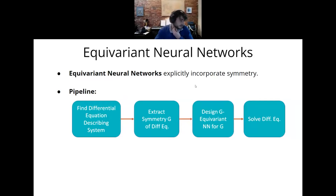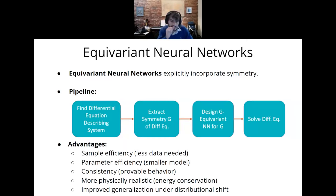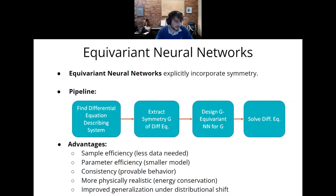Here's the pipeline for how I apply equivariant neural networks to a dynamics modeling problem. First, I find a mathematical model in the form of a differential equation. I extract the symmetry group of that differential equation — in practice this is not very hard, since a lot of differential equations are actually the result of first identifying what symmetries you want to observe and then finding an equation that satisfies them. Then I forget the mathematical model but remember its symmetries, create a neural network that explicitly incorporates those symmetries, and use that network to solve the differential equation. Compared to normal deep learning, this gives you: much less data needed, smaller models, some provable consistency behavior, increased energy conservation, and improved generalization.